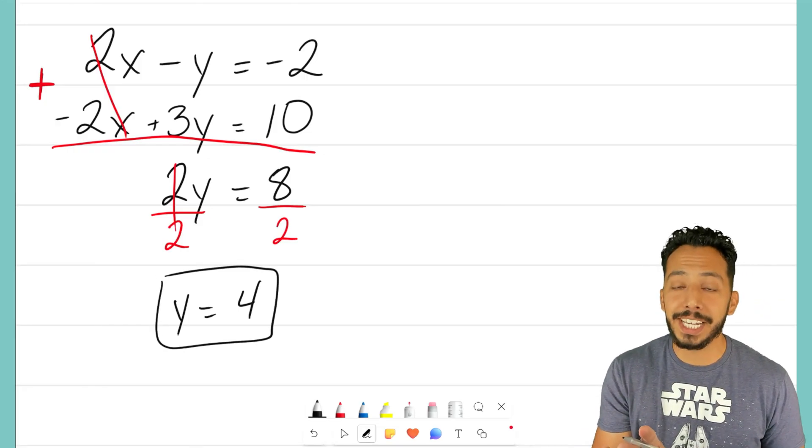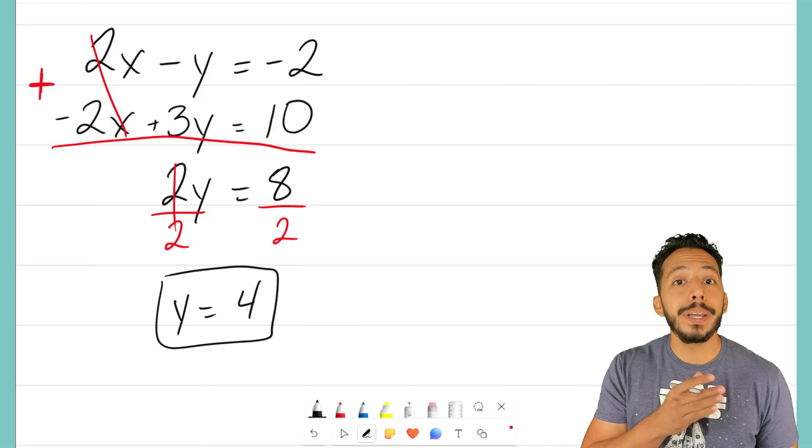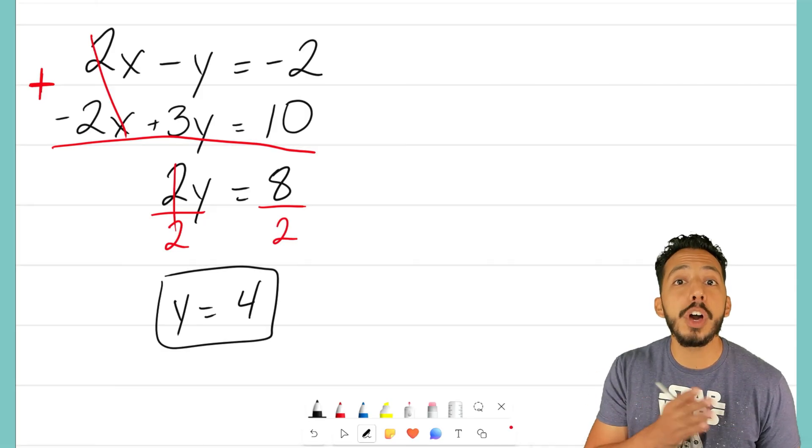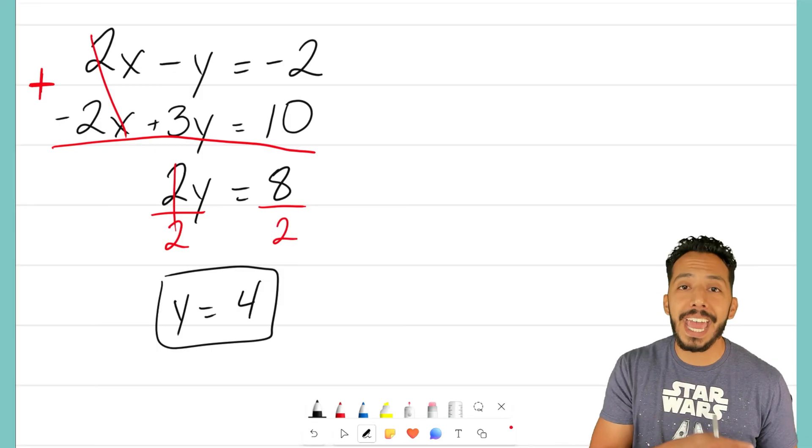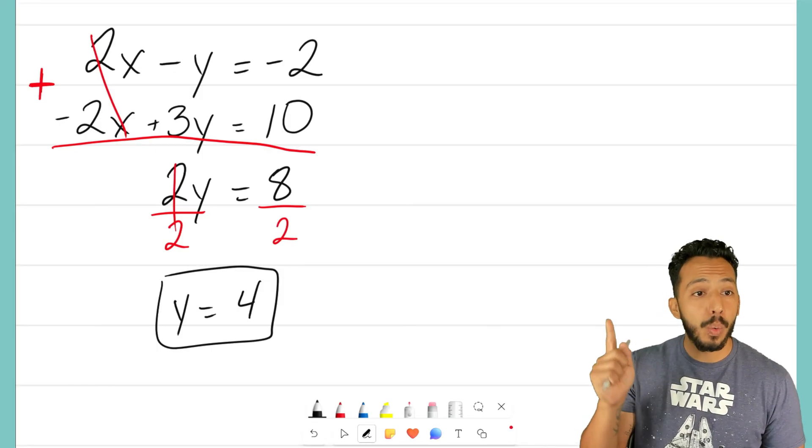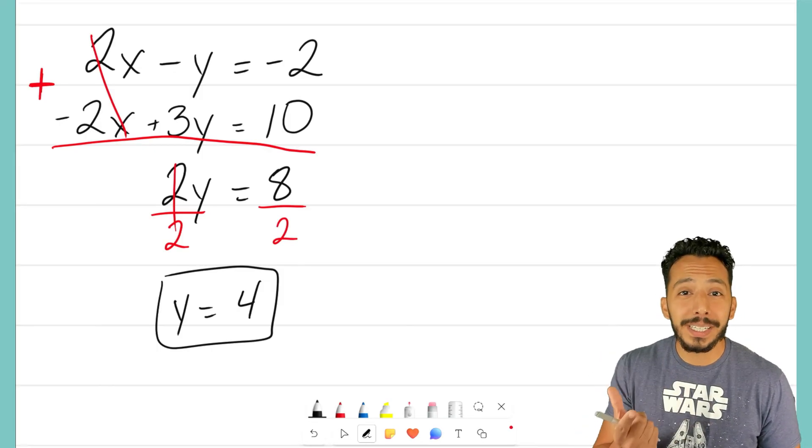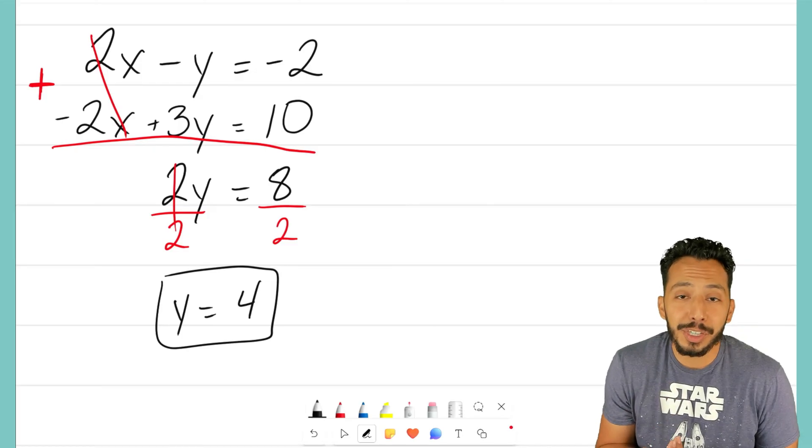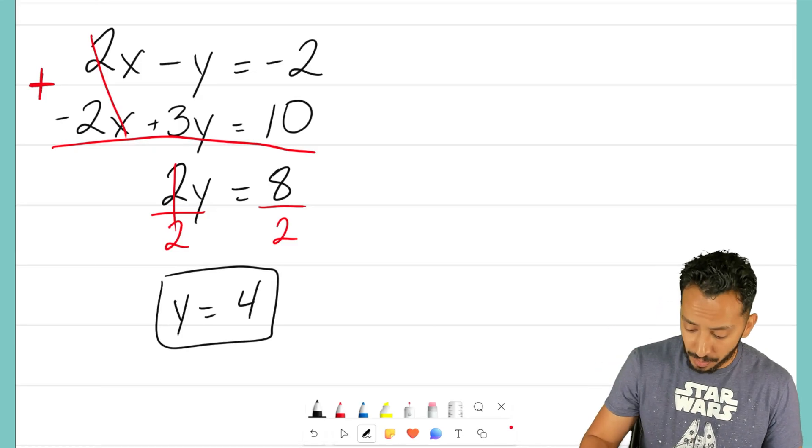Now, don't freak out, though. We're not done just yet. We solved for y. We now have to solve for x. We're always solving for two pieces, x and y. So, I take one of those equations, and I always tell my students to pick the easier equation, and I think that's the top equation.